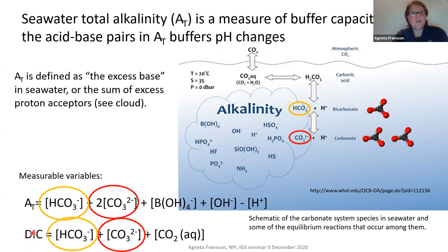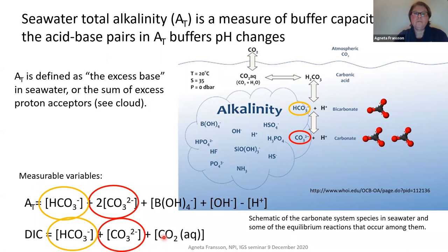Alkalinity consists of bicarbonate, carbonate, borate, hydroxide, and minor species. We can also measure dissolved inorganic carbon, which consists of bicarbonate and CO2. These two variables are very important for understanding pH and how carbonate chemistry changes.